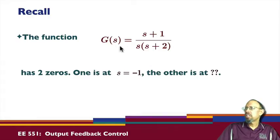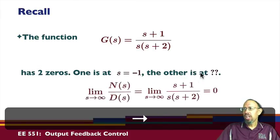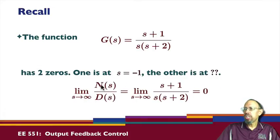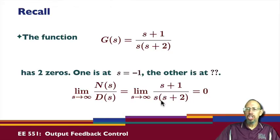Recall that this function has two zeros. It has a zero obviously at s equals minus one, but it also has another zero. If we take the limit as s goes to infinity of this transfer function, we find that it goes to zero. So what that means is that there is a zero out at infinity, and you can actually find out specifically where that zero is.